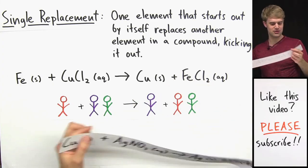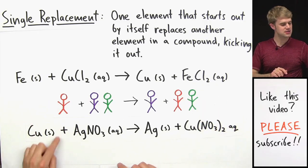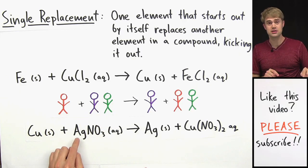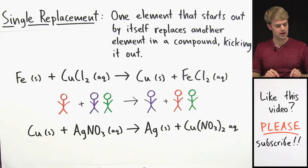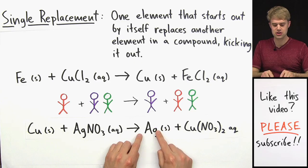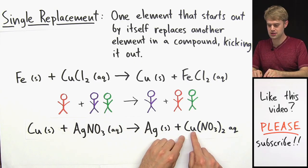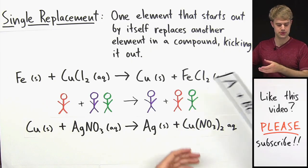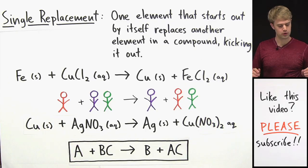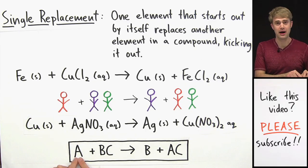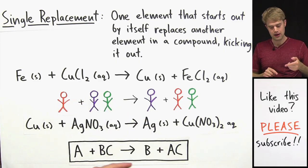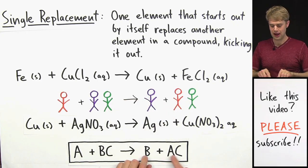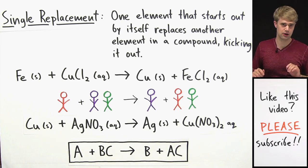Here's one more example of a single replacement reaction. Cu in this case is the red character. Cu goes to a dancing couple of Ag (silver) and nitrate, AgNO3. Cu boots out Ag, so Ag ends up by itself, and Cu takes Ag's place by pairing up with NO3. The generalized reaction for single replacement looks like: A plus BC gives us B by itself and AC paired together — where A is the element that starts out alone and B is the element that gets booted out.